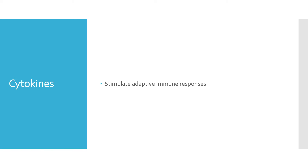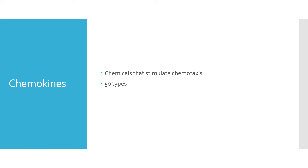Cytokines are a soluble mediator that stimulates the adaptive immune response. Chemokines are chemicals that stimulate chemotaxis, so cells move to the area of inflammation or infection because of chemokines. There are 50 different types of chemokines, and they will determine which cell type moves where.